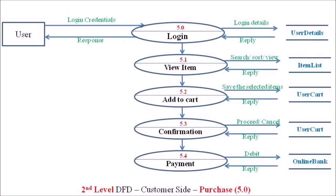Once the customer has gone through the items, they can purchase those commodities by selecting and adding those details into the add cart process. The add cart process saves the selected commodities, which are stored in the user cart data area.